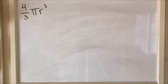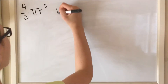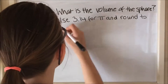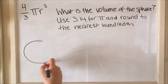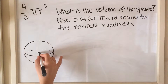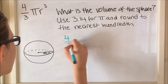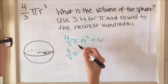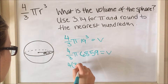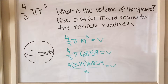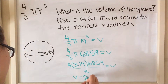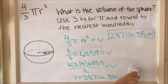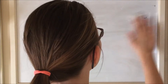Here is an example of how to find the volume of a sphere. It says to use 3.14 for π and to round to the nearest hundredths — that is important because you have to round. The radius of the sphere is 19 inches. You plug in 19 into the formula and make sure you cube it. All you need to know for the volume of a sphere is the radius. The volume of the sphere is 28,716.35 inches cubed, rounded to the nearest hundredth.